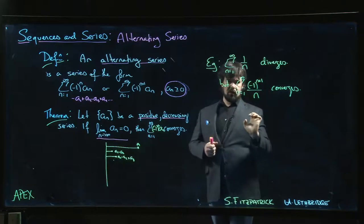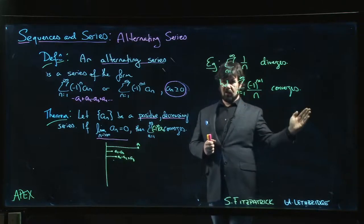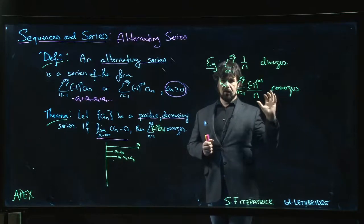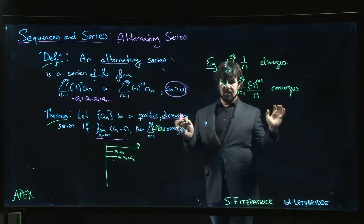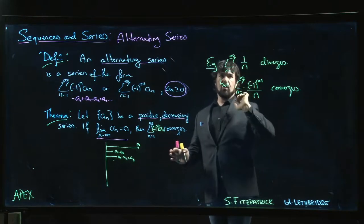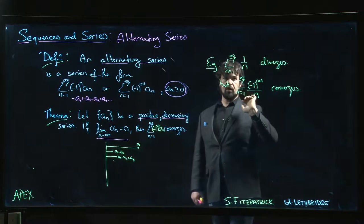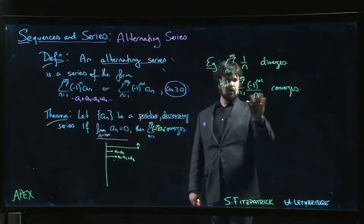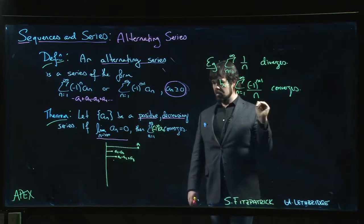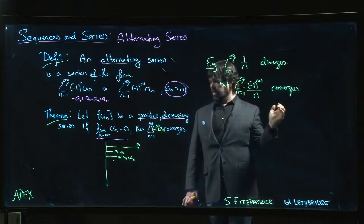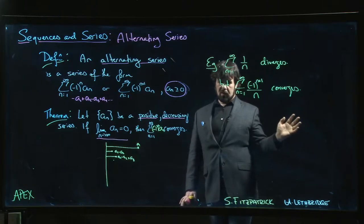Once you have an alternating series, you can rearrange the order in which the terms appear to get any real number you want, which is bizarre. For a series with only positive terms, you get a limit, and that limit is unique—there's only one possible value. But for alternating series, just changing the order around gets you different answers. It's bizarre, a strange thing.